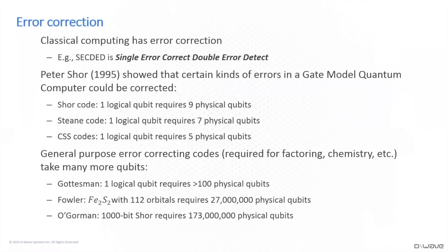And the answer is yes. There's a phrase you may have heard: SECDED — single error correct, double error detect. This can be implemented pretty easily in classical logic. And so the presence of things like that in the classical world suggests yes, we ought to be able to do that in the quantum world too. Peter Shor and some other people showed that yes, there are certain kinds of errors or noise in quantum systems that you can correct for by adding additional qubits to your base system.